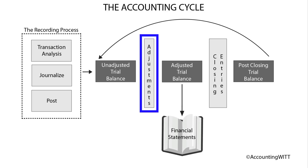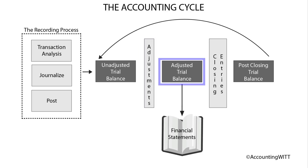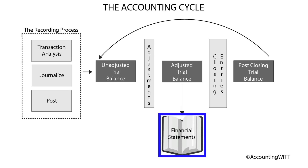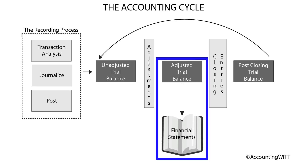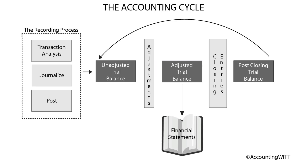After the appropriate adjustments are made, the trial balance is said to be adjusted. Once the trial balance has been completely adjusted, the information is ready to be communicated through the financial statements. The financial statements are produced from the information summarized on the adjusted trial balance.